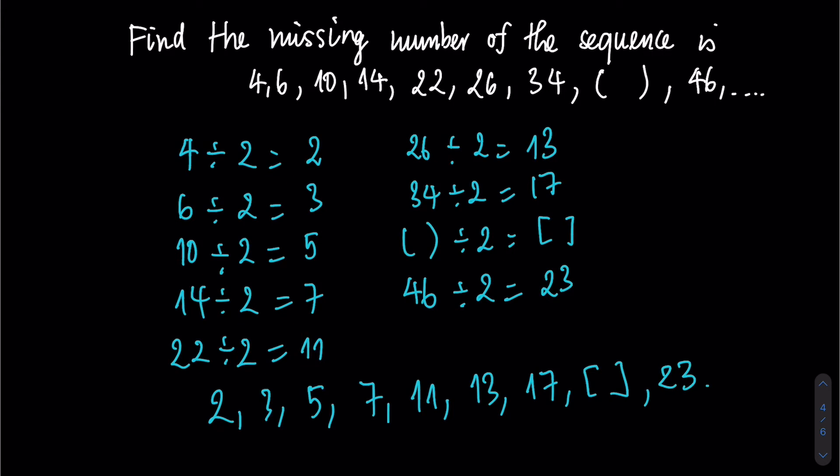As you can see, all the values here, they are prime numbers. Therefore, we can find the missing square, which is 19.